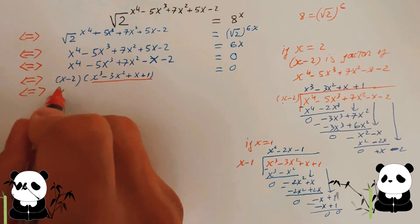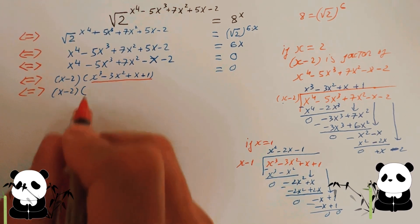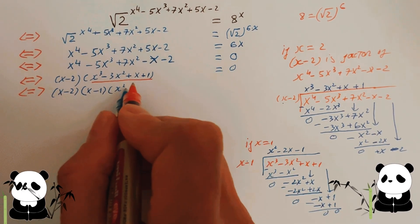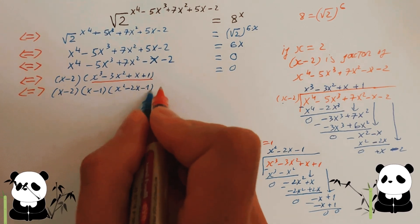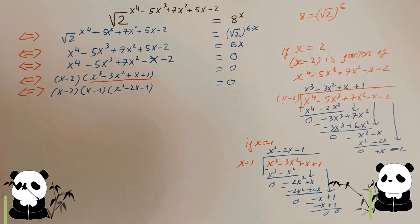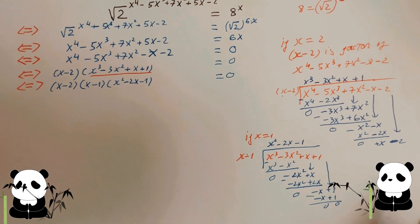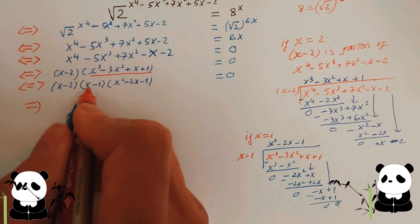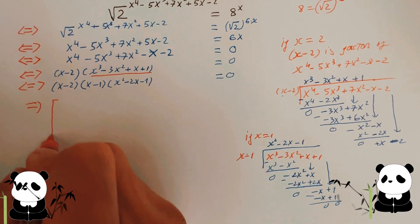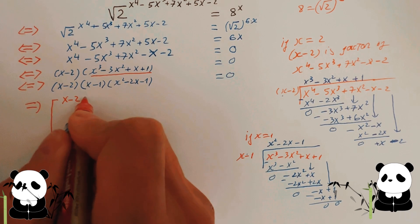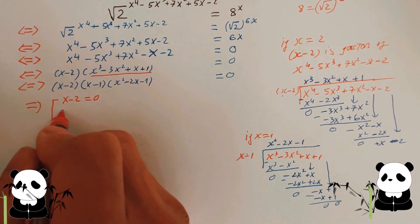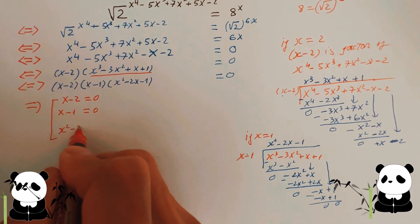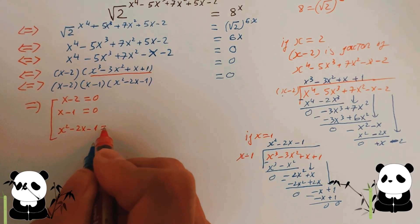So you can rewrite the whole equation as: x take away two, times x take away one, times x squared take away two x take away one, all equal to zero. Because that product equals zero, we have either x take away two equals zero, or x take away one equals zero, or x squared take away two x take away one equals zero.